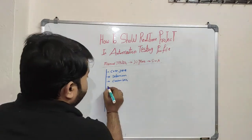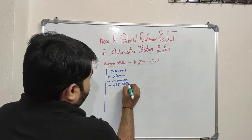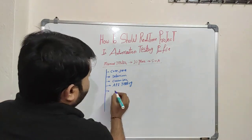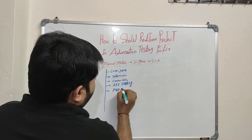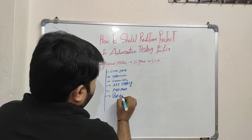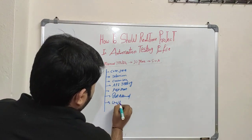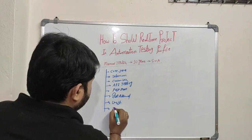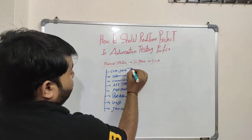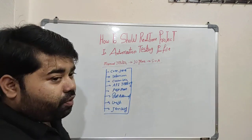Then you have to learn API testing. In API you have to learn Postman, then you have to learn REST Assured. Then you have to learn Git, and then you have to learn Jenkins. This is the minimum skill set required to switch from manual to automation profile.